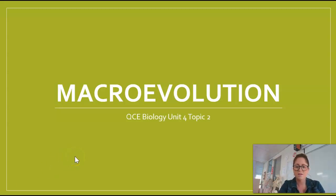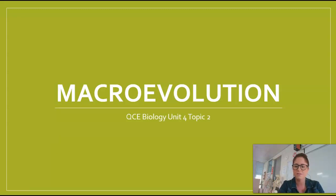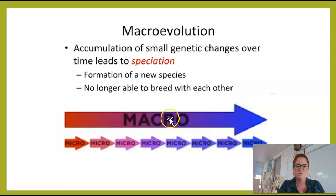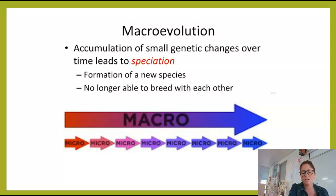Hi, it's Ms. Bastido here to talk about our last video in Unit 4, which is macroevolution. This will be the last video for Unit 4, which kind of wraps up all the videos for this year. We've already defined macroevolution in another video, but as a reminder, macroevolution is all of these really small genetic changes or bits of microevolution that accumulate over long periods of time, and that leads to speciation.